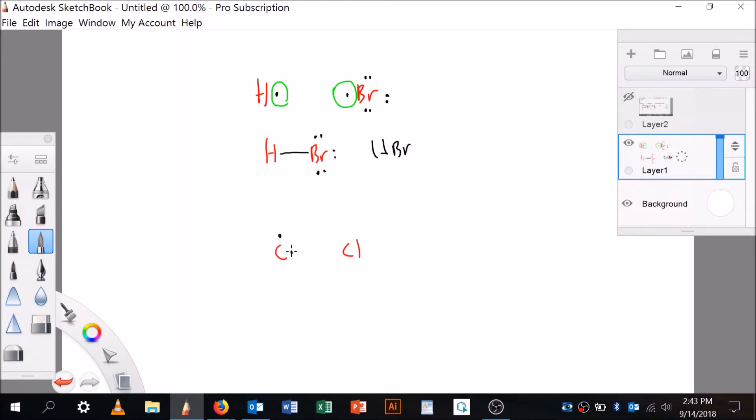Carbon and chlorine. It's in group four, one, two, three, four. Chlorine's in group seven. One, two, three, four, five, six, seven. Okay,